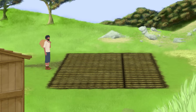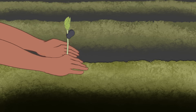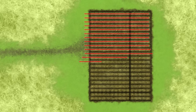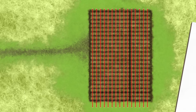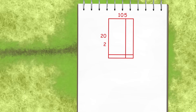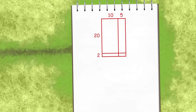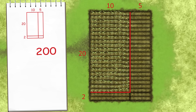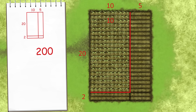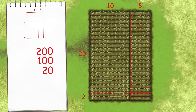Then the farmer planted black beans in 22 rows of 15. To find out how many plants he had, he drew the area model on his sketch pad. He did 20 times 10 and wrote 200 down. Then 10 times 2 and 20 is what he found. 20 times 5 was 100, and then 5 times 2 equals 10.